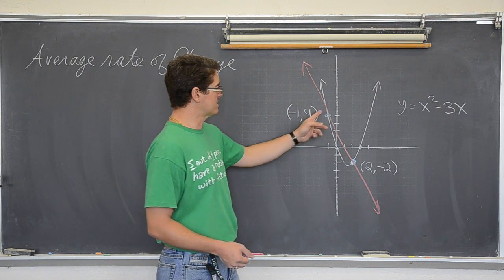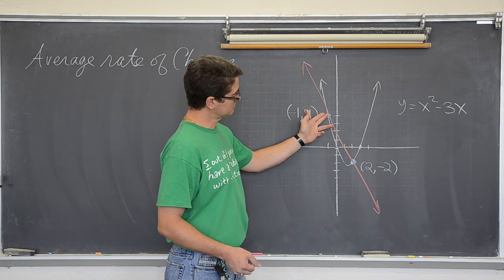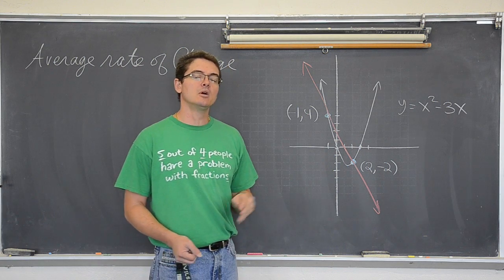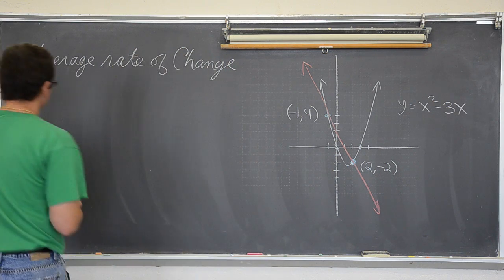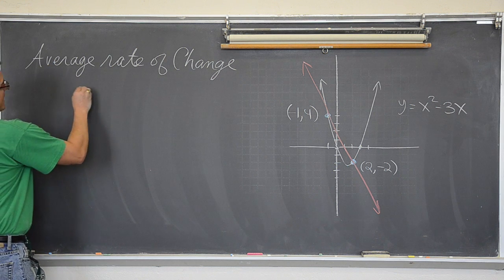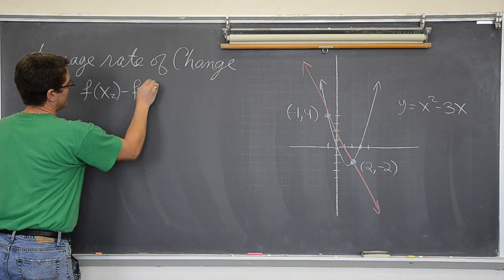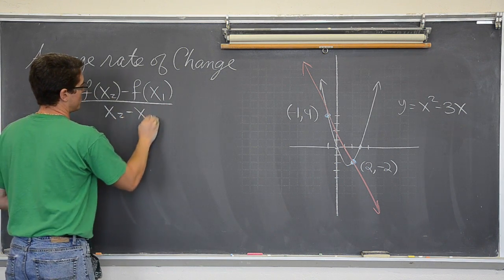When we find this rise over run between these two points, we are not going to be able to call it slope. We are going to call it rate of change. Rate of change as a formula is f of x sub 2 minus f of x sub 1 over x2 minus x1.